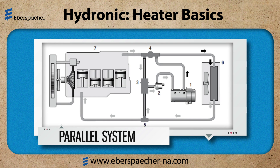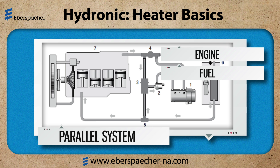The parallel circuit is common in automobiles in Europe. The heater will start and once the coolant reaches temperature, then the defrost fan is activated. As the coolant continues to heat, then the thermostatic valve opens and the engine is preheated. A system like this would apply to larger applications where you are heating several items, like the engine, the fuel, and maybe hydraulic oil.